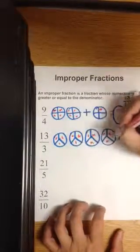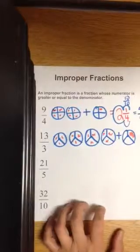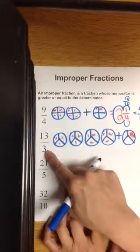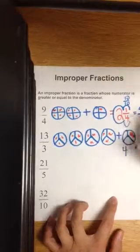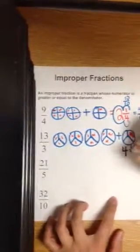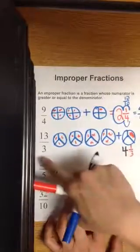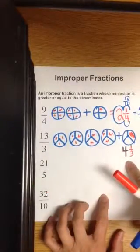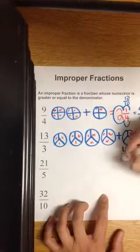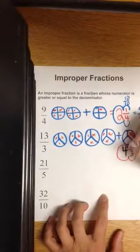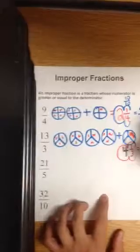So 3, 6, 9, 12 plus one more is 13. So how many thirds go into 13? Four wholes plus 1 third. So 13 third is the same or equivalent to 4 and 1 third. Let's check our work with the popcorn method. 4 times 3 is 12 plus 1 is 13 third.